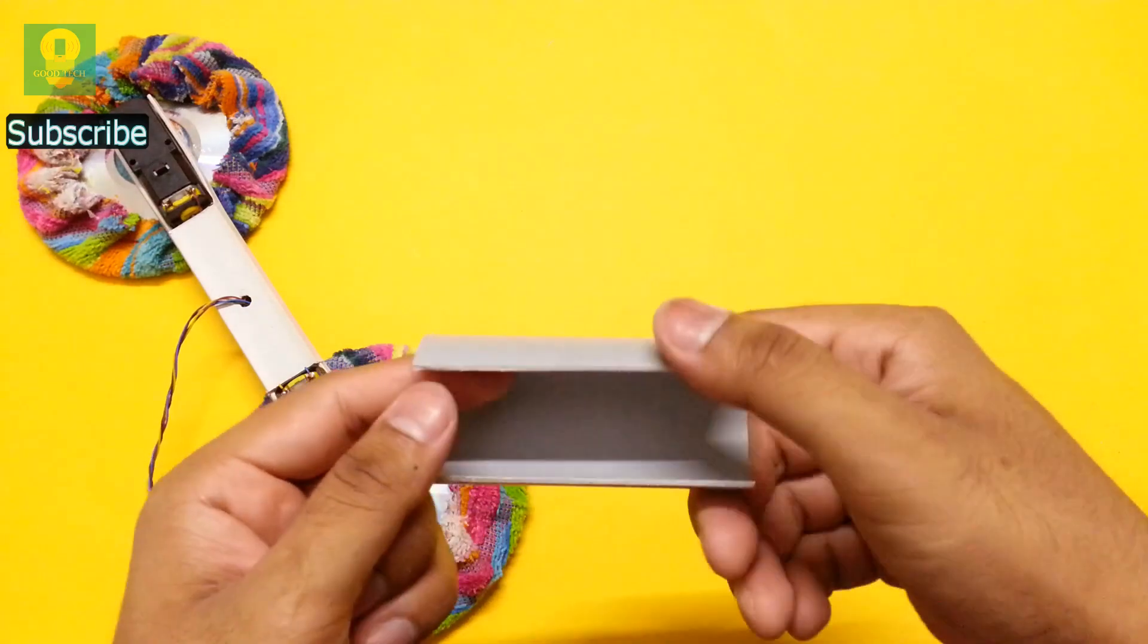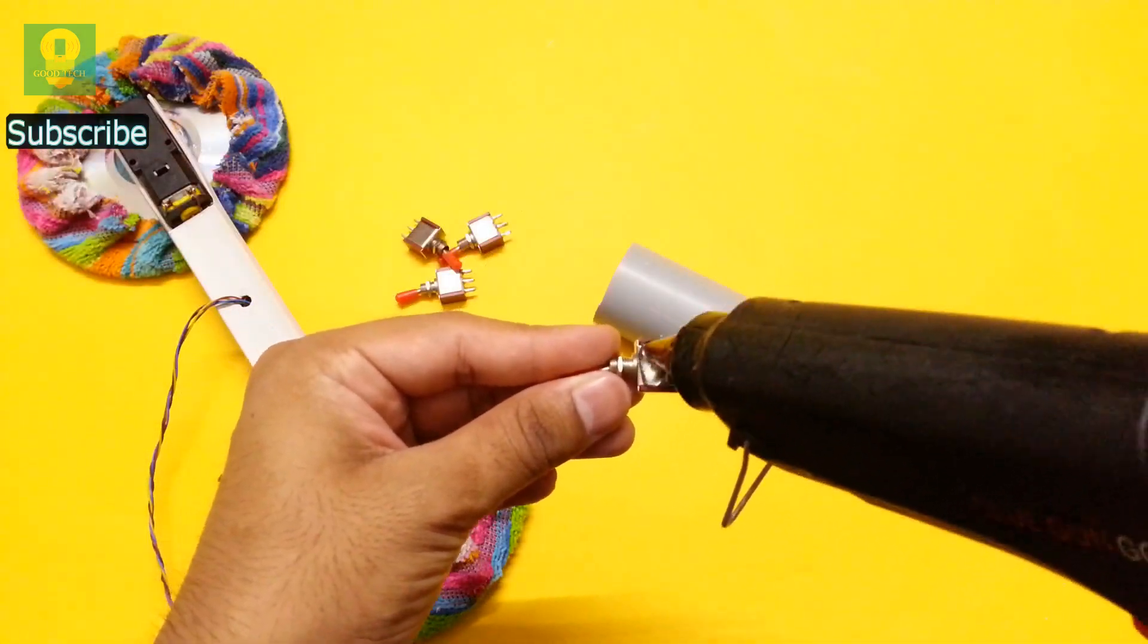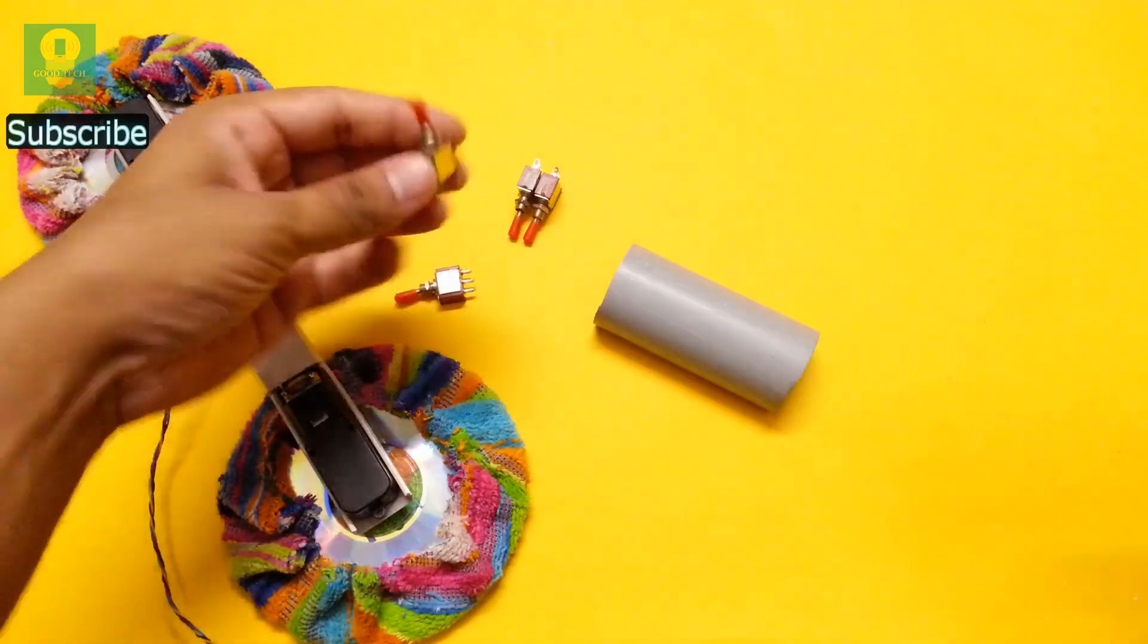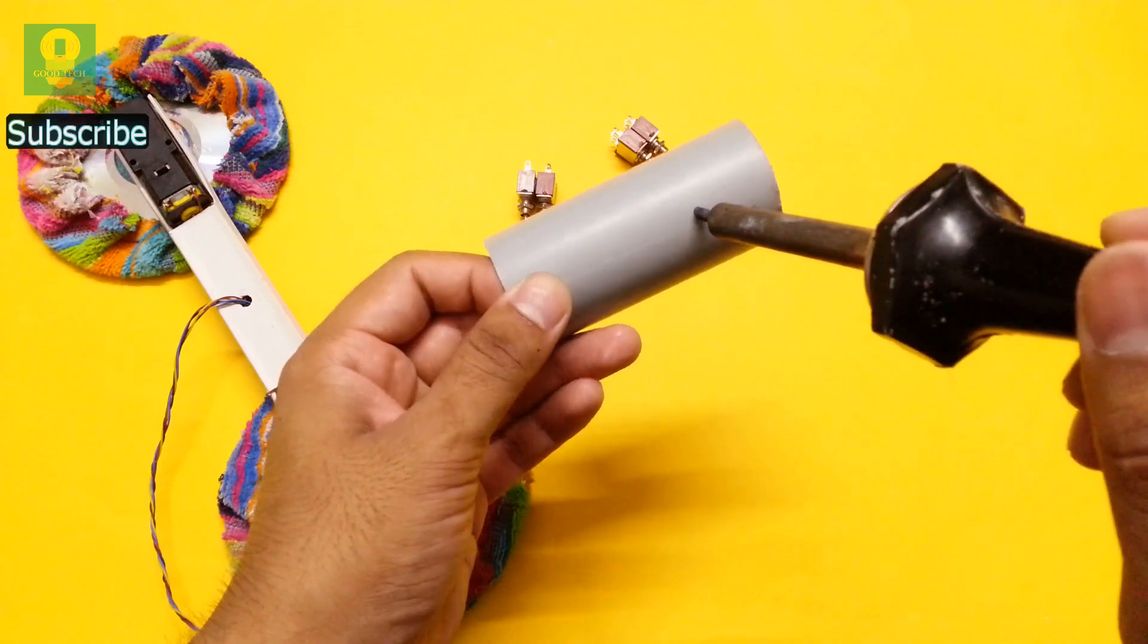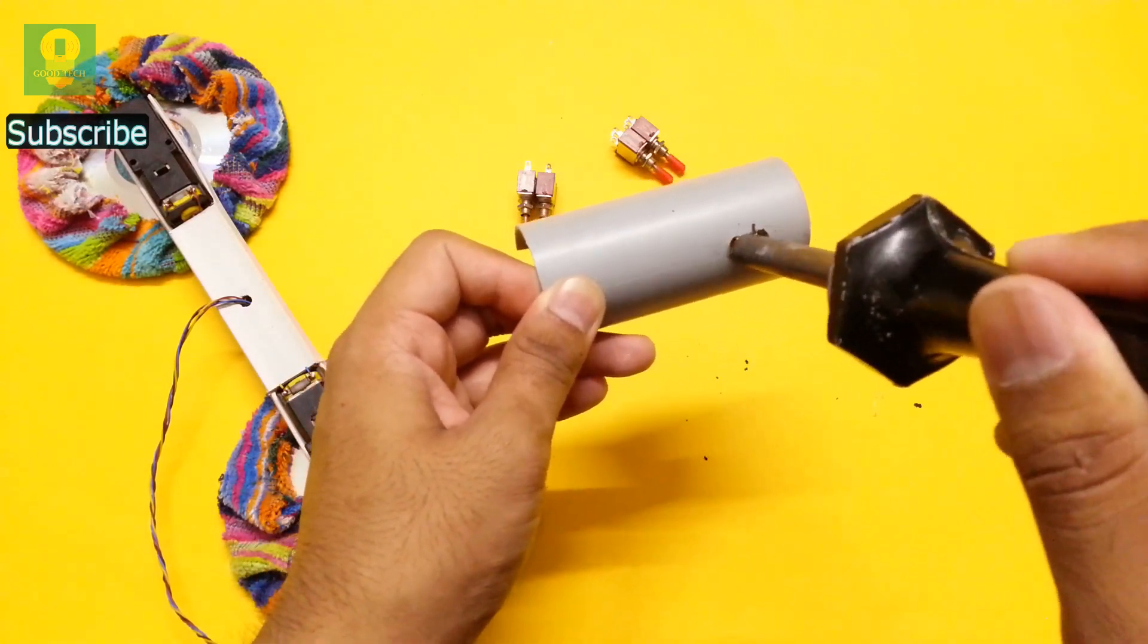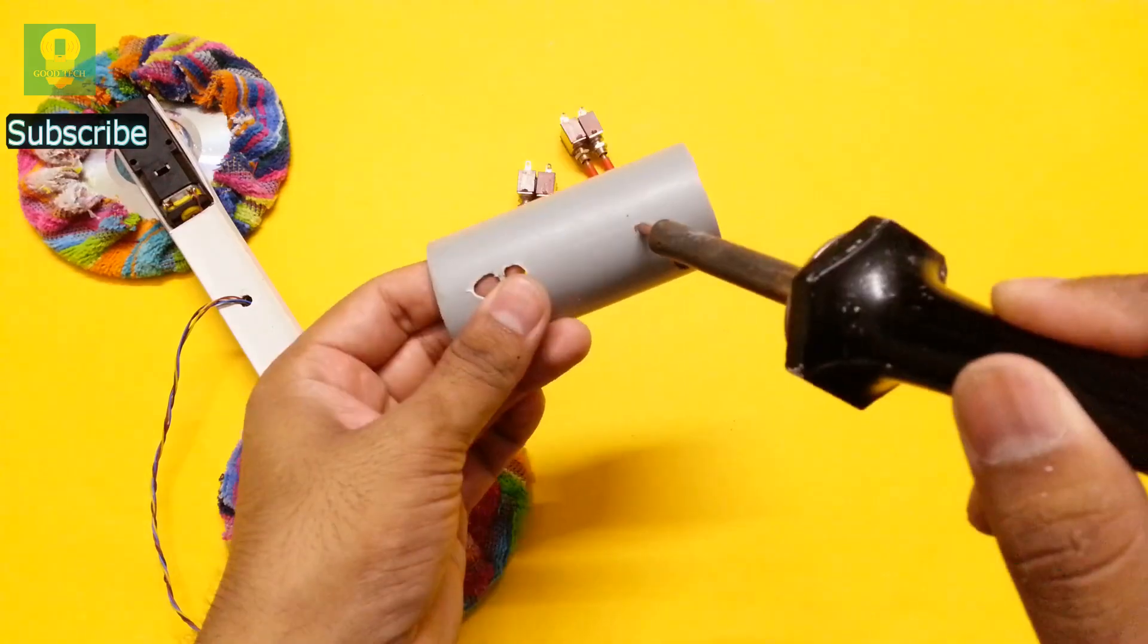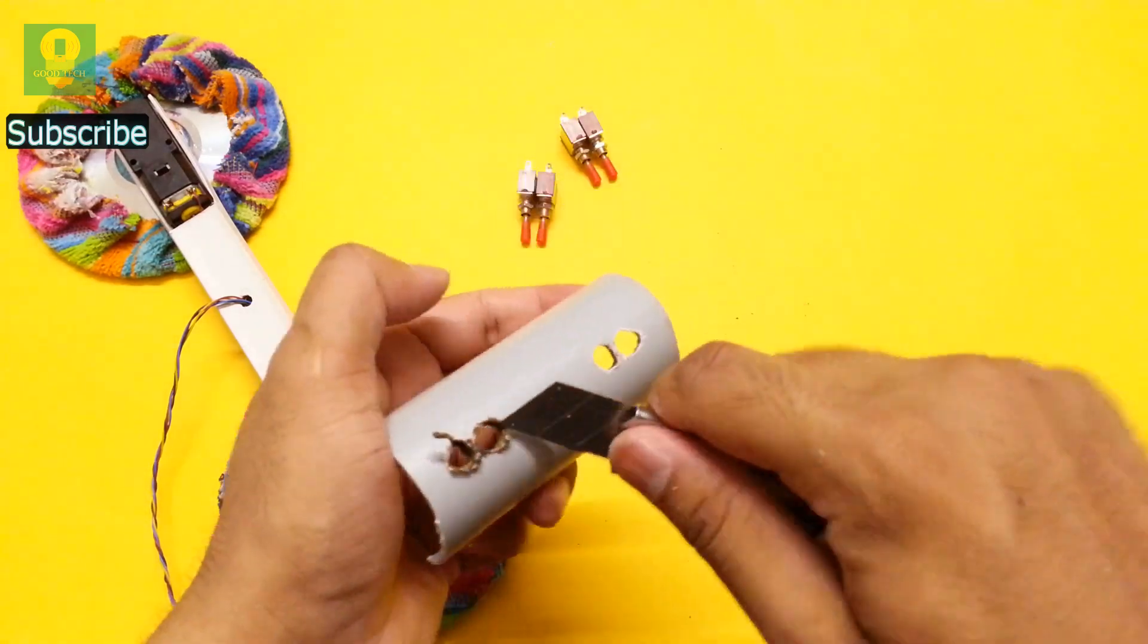Take a half cut PVC pipe and four two way switches. Using hot glue, paste two switches together and make two such pairs. Make four holes in the PVC pipe. Clear the black residue using a knife.